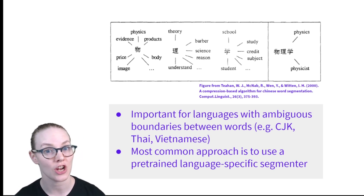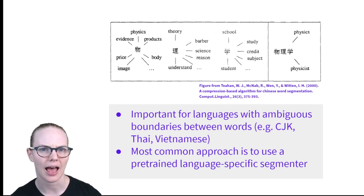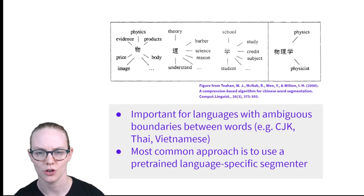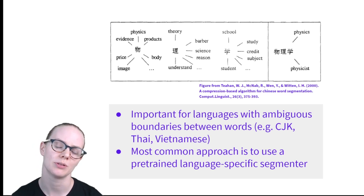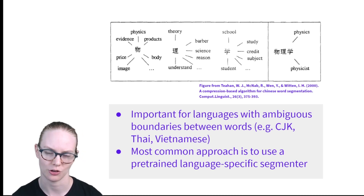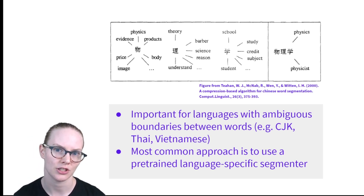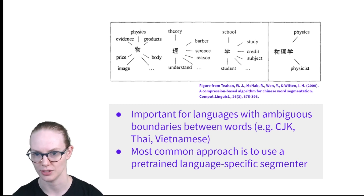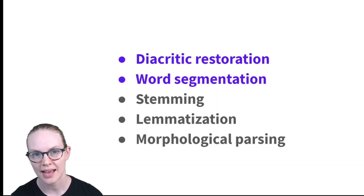That includes CJK — Chinese, Japanese, and Korean — as well as Thai and Vietnamese. The most common approach to this is to use a pre-trained language-specific segmenter. So you'd use a Chinese word segmentation algorithm for your Chinese text, a Vietnamese one for your Vietnamese text, and so on.